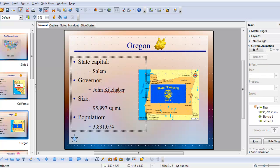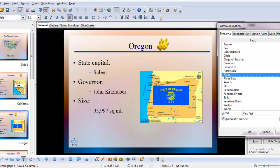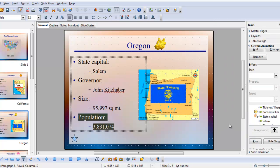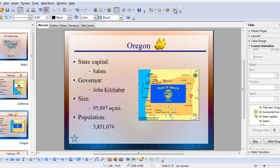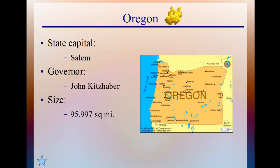Now we're going to animate in the population figure. I'll click add, go back to the entrance tab, fly it in at medium speed, and click OK. Let's look at the slideshow effect for this slide. Here we have Oregon with the line coming in right away — space bar, in comes the state and the flag — space bar, in comes the governor — space bar, the flag disappears and the map appears — and the population comes in. So our animations are done.